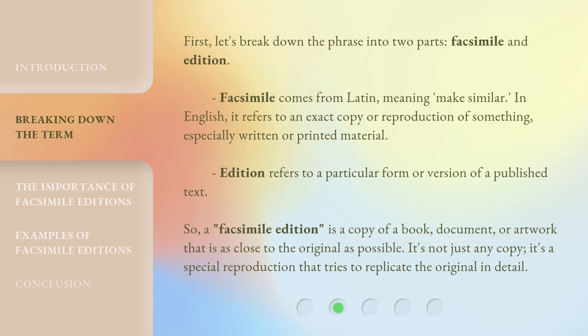First, let's break down the phrase into two parts: facsimile and edition. Facsimile comes from Latin, meaning 'make similar.' In English, it refers to an exact copy or reproduction of something, especially written or printed material.